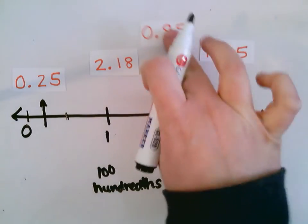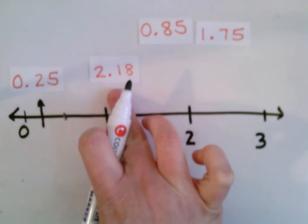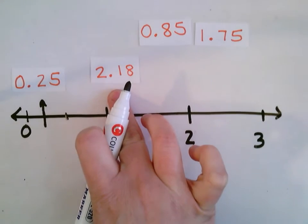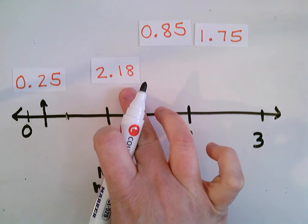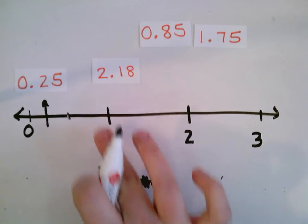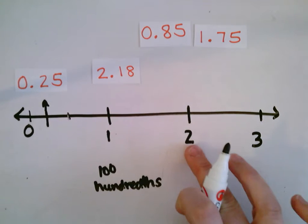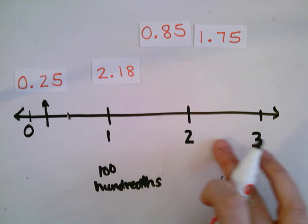My next number that I'm going to look at is 2.18. 2 and 18 hundredths. So I know it's greater than 0. I know it's greater than 1 because it's going to start with 2. So I know this number is going to come somewhere between 2 and 3.